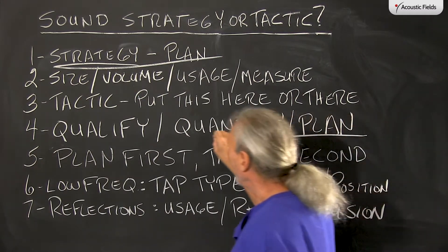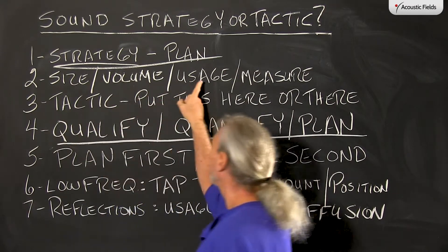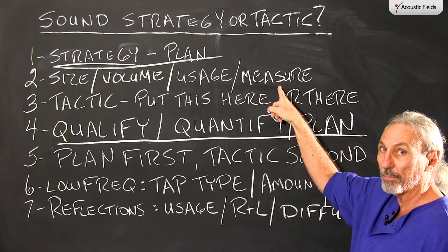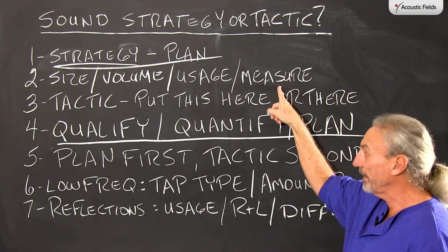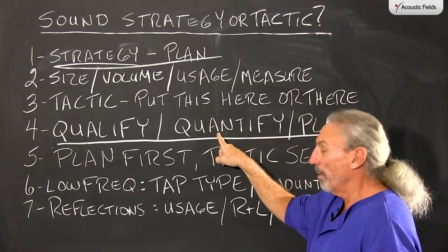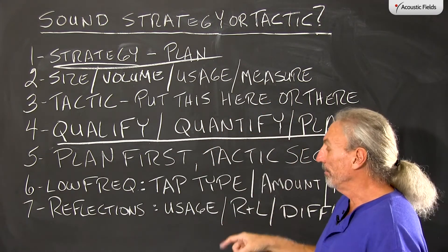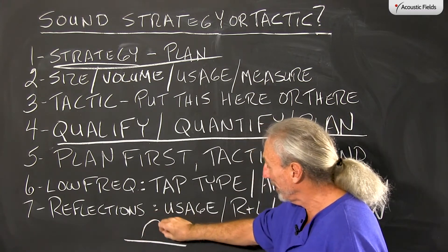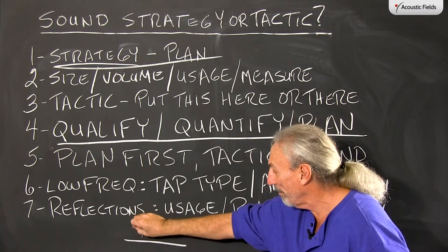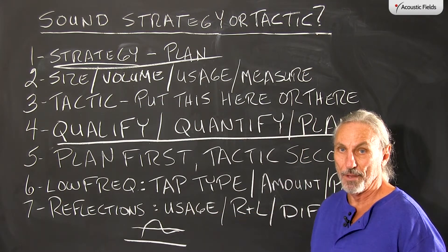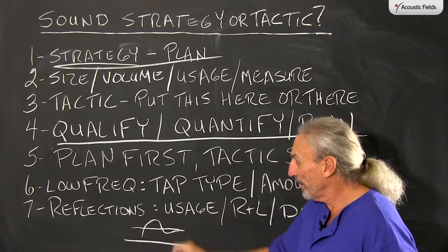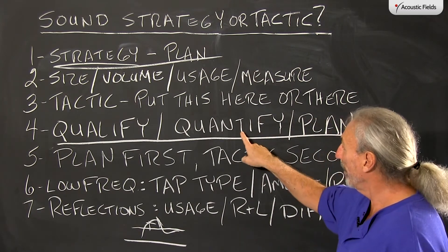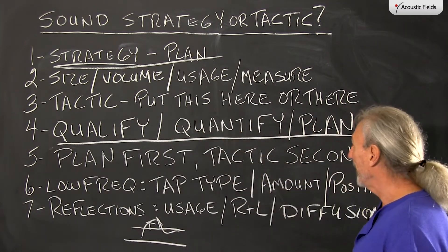So let's qualify first. What are we doing in the room? How big is it? Is it going to fit our usage? What are our problems going to be? You can know that ahead of time. Quantify what we have to do. If we have a big bump below 100 cycles, what are we going to do to flatten it out? How much surface area are we going to need to get rid of that? So we have to quantify and qualify — those are our things.